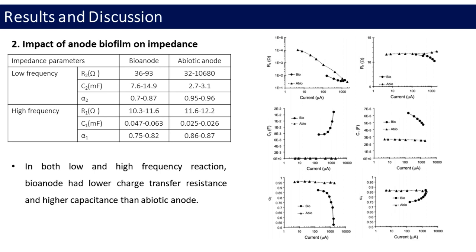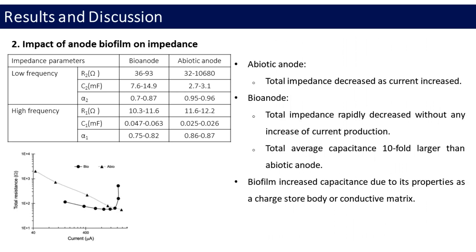In high-frequency, the impedance characteristics were relatively similar between the abiotic anode and the bioanode. Total average capacitances, 30 mF, of the bioanode was ten-fold larger than the abiotic anode, 3 mF, possibly due to the dominance of Geobacter sulfurreducens, which is a dominant exoelectrogenic strain of the anode biofilm in this tested MFC system. Acetate could be utilized as an electron donor preferentially and activation over potential also could be minimized.